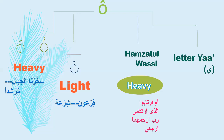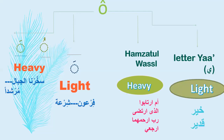If Ra has Sukun and is preceded by a Ya letter, it is light. Examples: 'Khair' and 'Qadir' — light Ra. 'Khair', 'Qadir'.